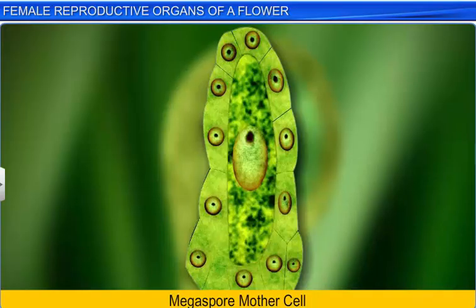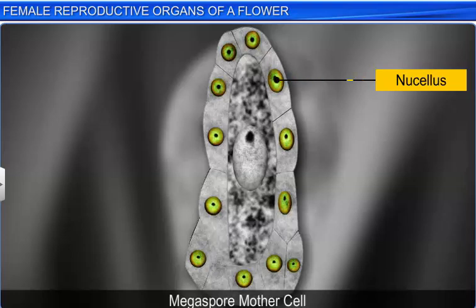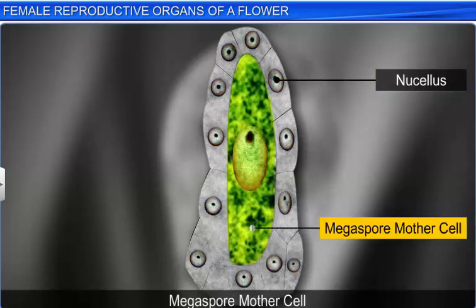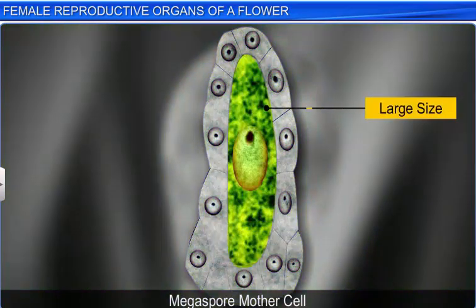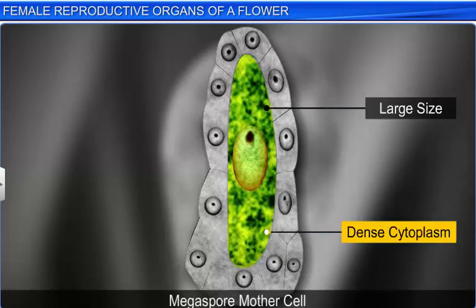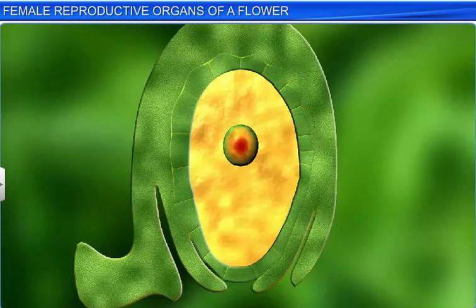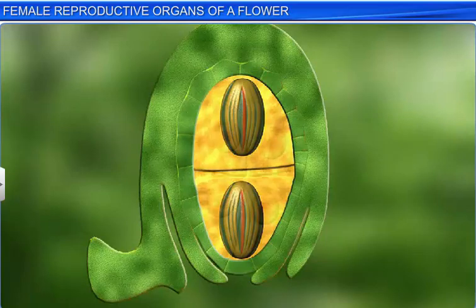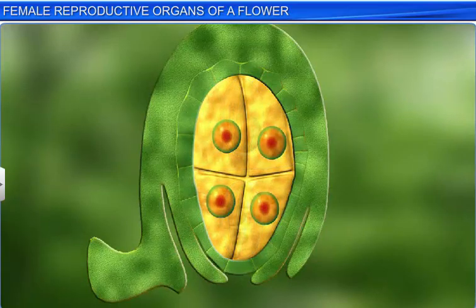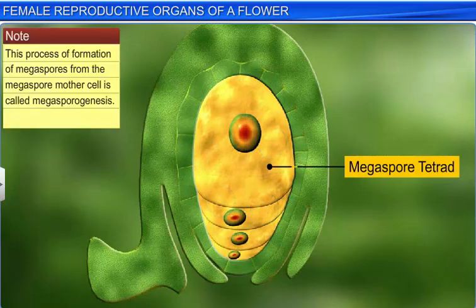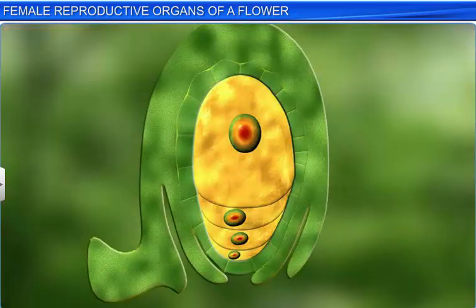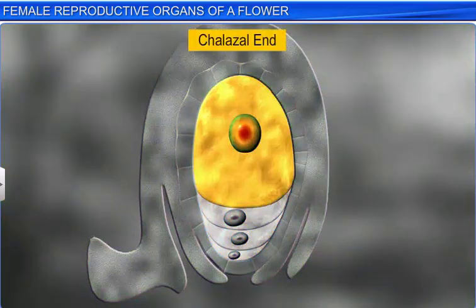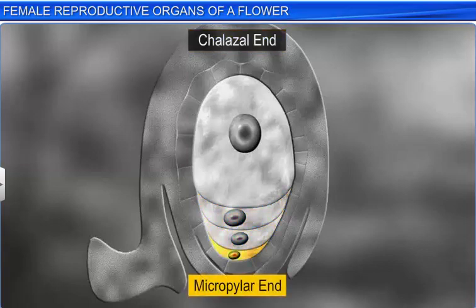This megaspore is formed when one of the nucellus cells, towards its micropylar end, gets differentiated into a megaspore mother cell, which can be easily distinguished from other cells due to its large size, dense cytoplasm, and prominent nucleus. The megaspore mother cell undergoes meiosis to form four megaspores, which arrange themselves in a linear tetrad. This process of formation of megaspores from the megaspore mother cell is called megasporogenesis. Of the four megaspores, usually the one near the chalazal end becomes functional, whereas the other three, near the micropylar end, degenerate.